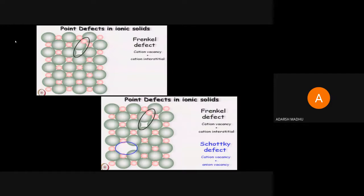Frenkel defect — it can be explained as the missing of a cation plus anion together. A cation is moved from its position and placed in another portion of the same crystal, misplacing from one position and laying in another portion. The Frenkel defect is the missing of a cation or anion from its position and being arranged at another interstitial position.